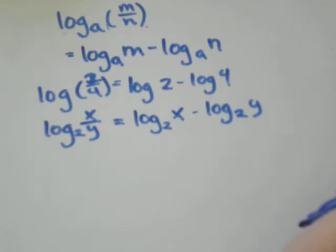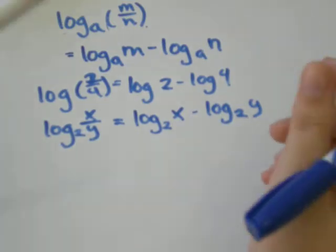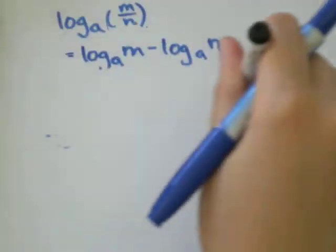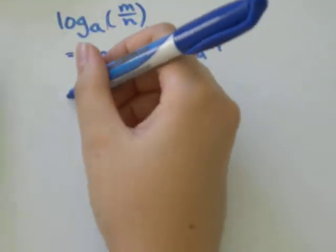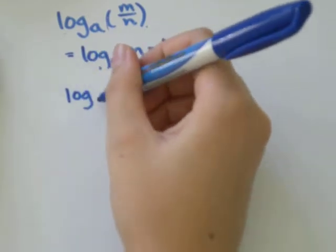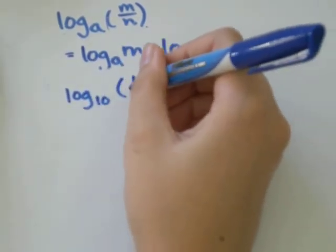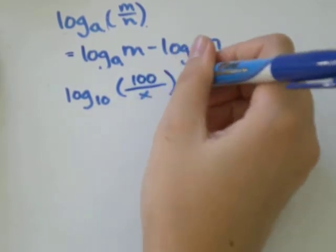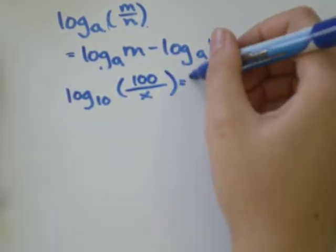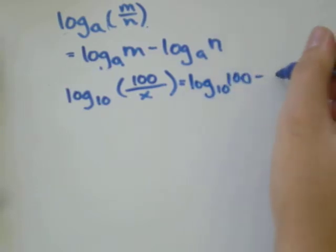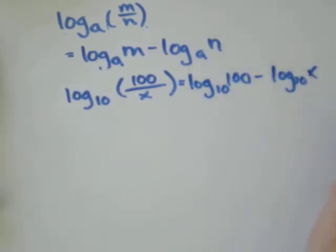Let's do another one together. Let's say we had log base 10 of 100 over x. That would be the same as log base 10 of 100 minus log base 10 of x.